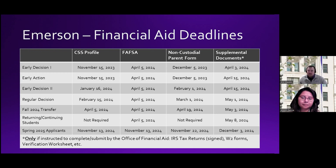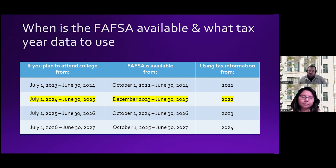The non-custodial parent statement has deadlines as well; we can give a little more time on those if needed since we can't necessarily request them until we've processed your CSS Profile. The FAFSA is using your 2022 tax information. Typically the FAFSA becomes available every year in October, so next year you'll use 2023 taxes, and so on. If you're only seeking federal aid, you can complete it at any point during the academic year, but if you are looking for institutional need-based aid, you need to get that submitted quickly.